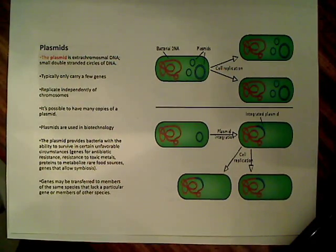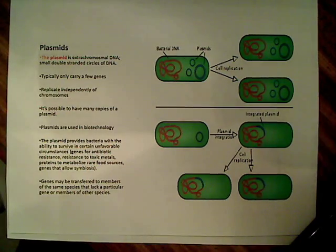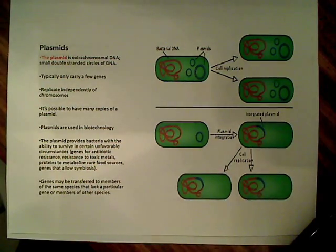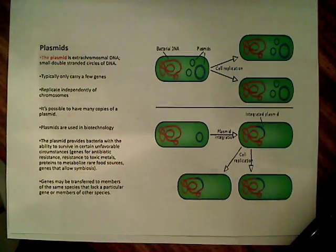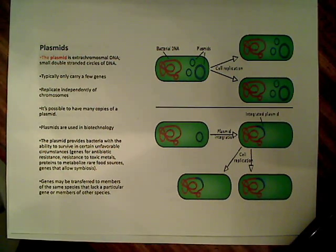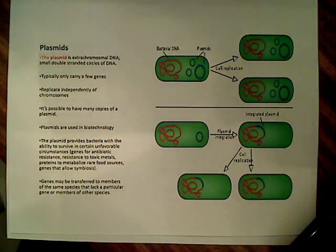Plasmids are used in biotechnology all the time. The genes on plasmids provide bacteria with the ability to survive under certain unfavorable circumstances — you'll find genes for antibiotic resistance, resistance to toxic metals, proteins to metabolize rare food sources like lactose, and genes that allow for symbiosis. Genes may be transferred to members of the same species that lack a particular gene, or even to members of other species. So we don't just have vertical gene transfer — we also have horizontal gene transfer, which I'll discuss in depth soon.